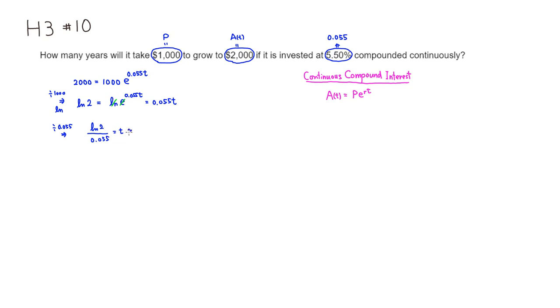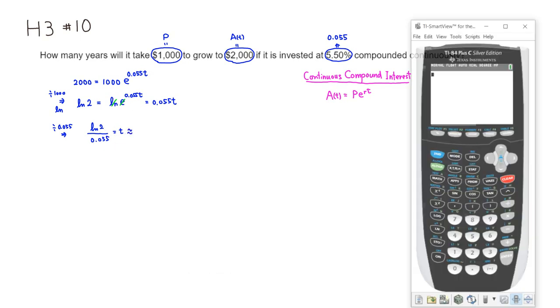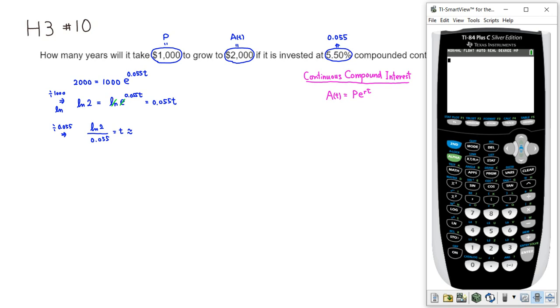So let's find this value. So I'm going to just bring out a calculator. All right, so we have natural log of 2, and then we want to divide it by 0.055.